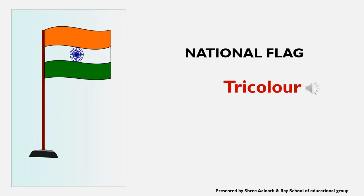This is the national flag of India, whose name is Tricolor — Tiranga. We call it Tricolor because it has three colors. In this tricolor, the topmost color is saffron — orange color, saffron color. Then comes the white color in the middle, and at the bottom is the green color. So the sequence is: saffron, white, and green.